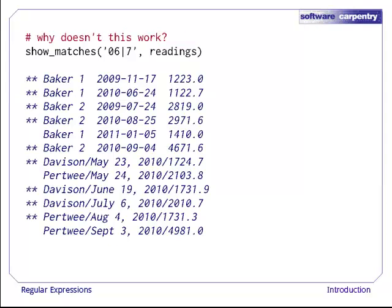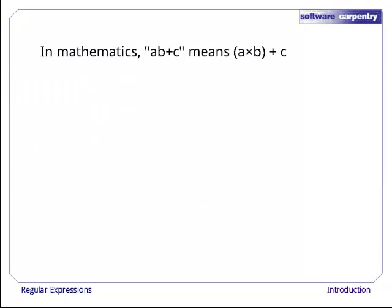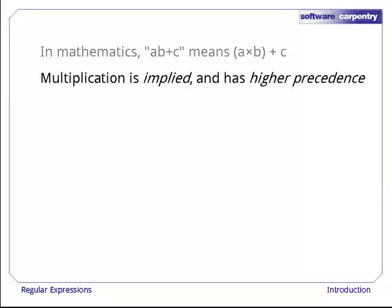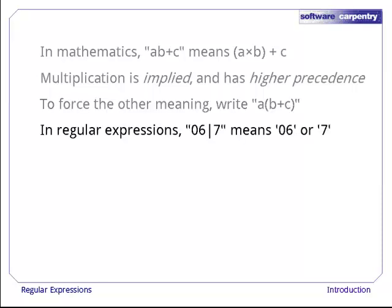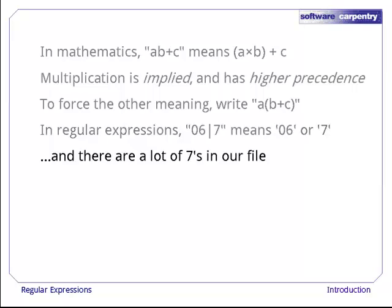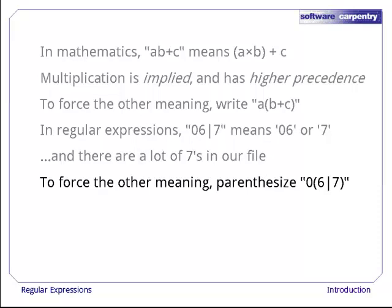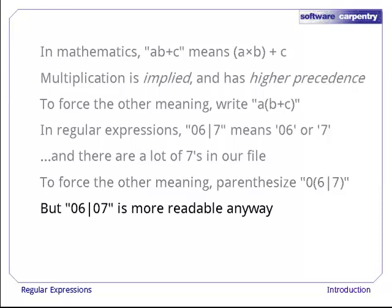Why doesn't this work? If we match 06 or 07, it seems to be matching a lot of things that don't have the month 06 or 07. Well, think back to mathematics. The expression AB plus C means A times B plus C. Multiplication is implied simply by putting A and B next to each other, and it has higher precedence than addition. We always do multiplication before we do addition. If we want to force the other meaning, we write A times parentheses B plus C. The same thing happens with regular expressions. If we say 06 or 07, it means exactly what I said, either 06 or the digit 7. If you look back at our data, there are a lot of 7s in our file. If we want to match 06 or 07, we can parenthesize as shown here. Having said that, the expression 06 bar 07 is probably more readable to most people anyway.